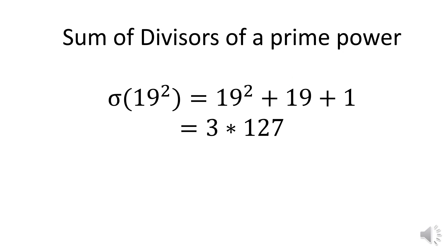Finding the sum of divisors of a prime power is easy. Nineteen squared divides nineteen squared, and so does nineteen, and so does one. Nineteen squared plus nineteen plus one equals three times 127.